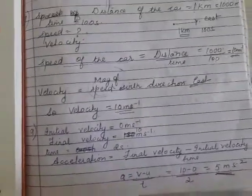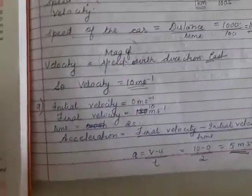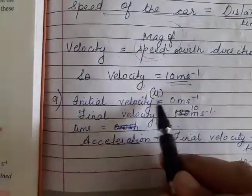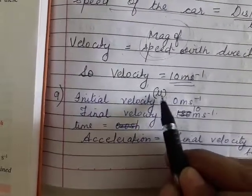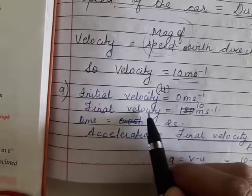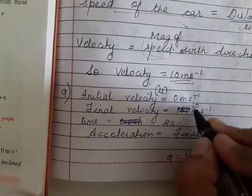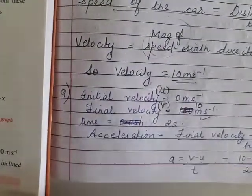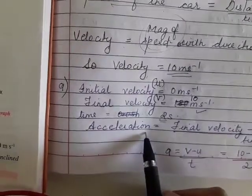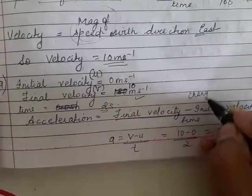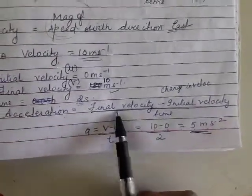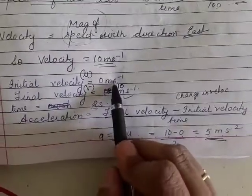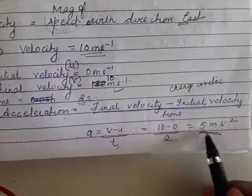The ninth numerical: a body starts from rest and acquires a velocity of 10 m/s in 2 seconds. Find the acceleration. Initial velocity u = 0 m/s (starting from rest). Final velocity v = 10 m/s. Time t = 2 seconds. Acceleration = (v − u) / t = (10 − 0) / 2 = 5 m/s².